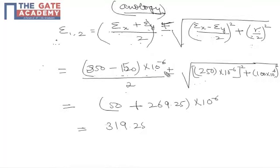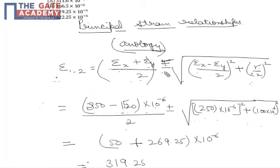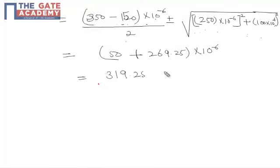This gives us 100 × 10^-6 plus square root of (250 × 10^-6)² plus (100 × 10^-6)², since gamma is 200 × 10^-6, so gamma by 2 is 100 × 10^-6. Upon simplification, this gives 319.25 × 10^-6.